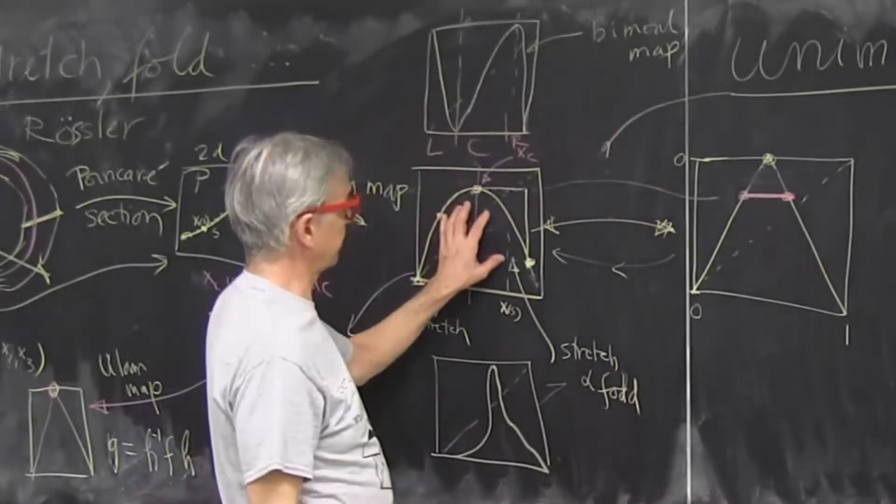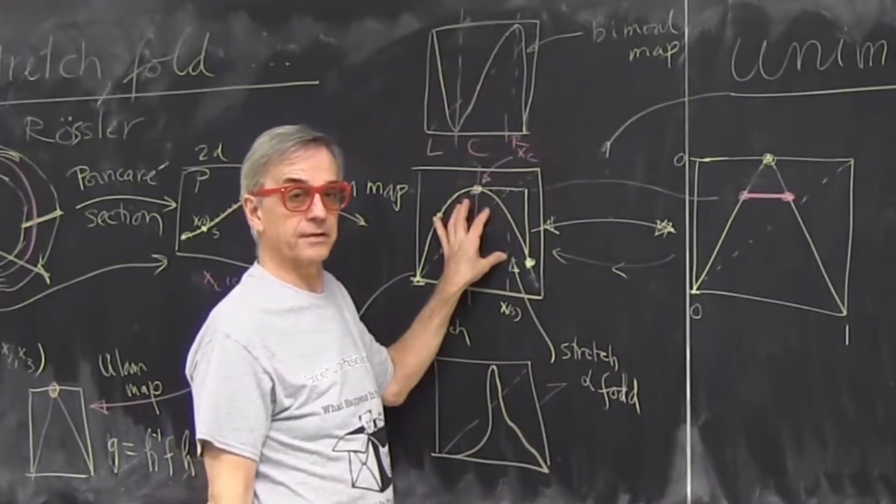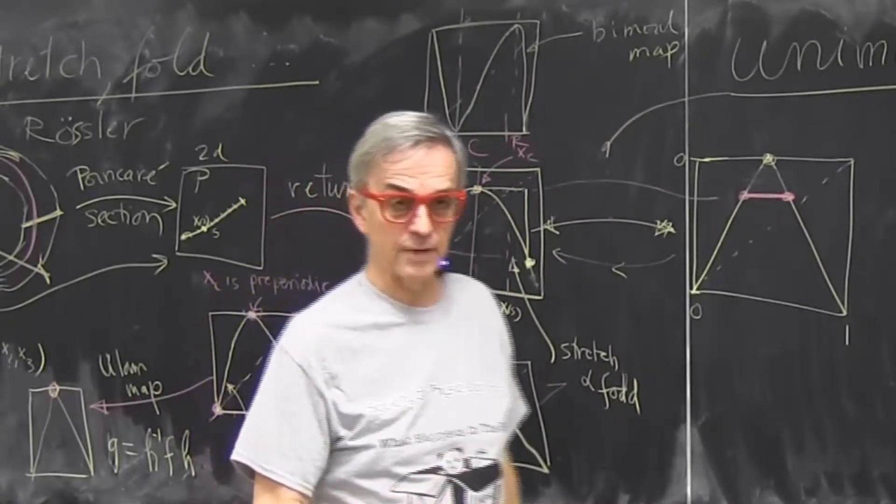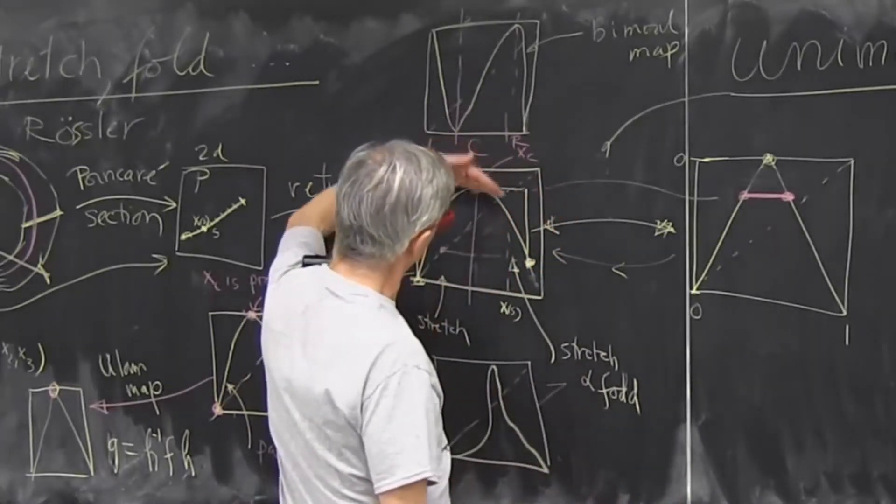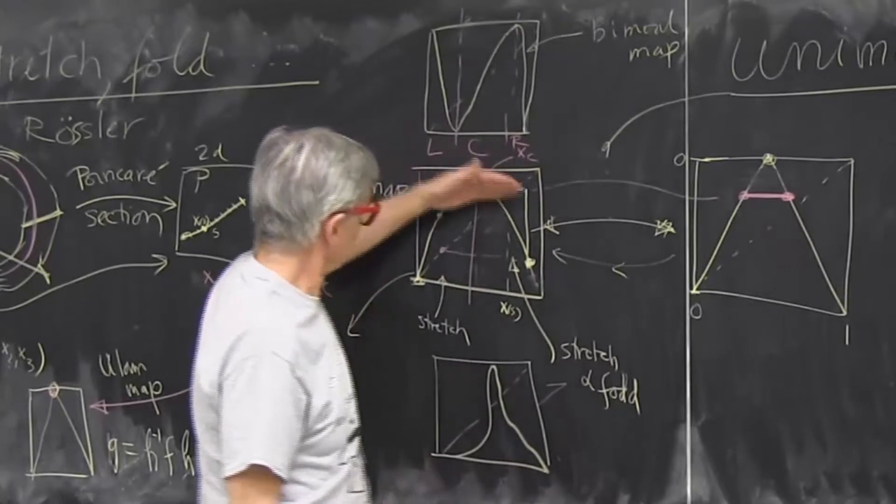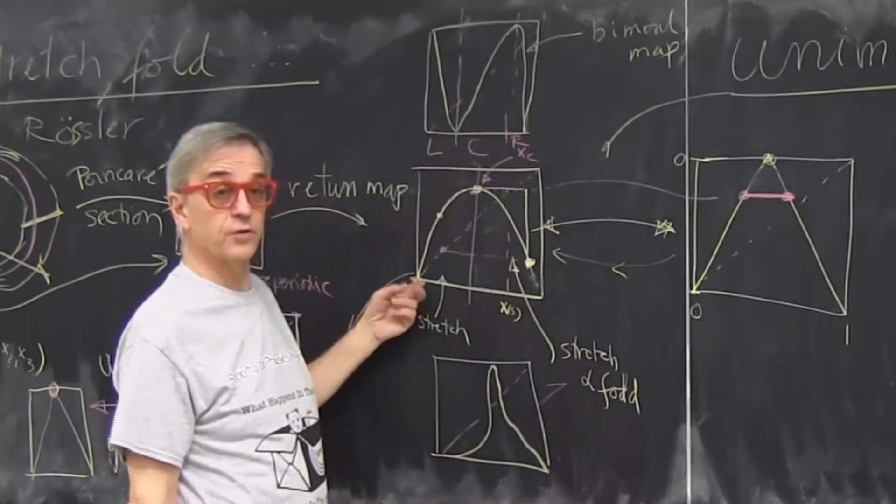So that happens. In that case, we talk about not attractors but repellers. Dynamics is such that almost everybody runs away except the fractal set of things that hang around. But if the map doesn't reach the unit interval, we do have a strange attractor and non-trivial grammar.